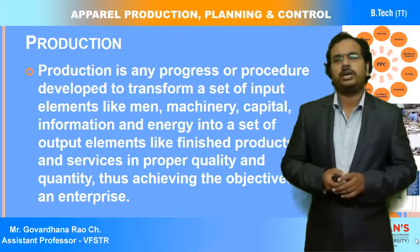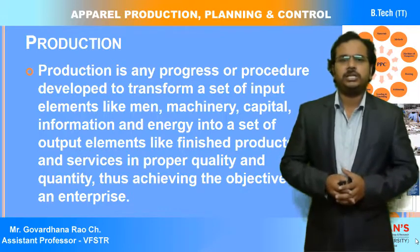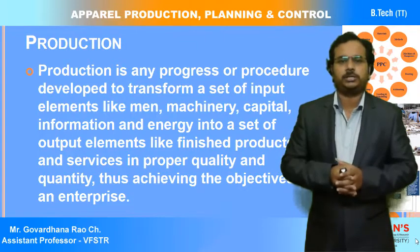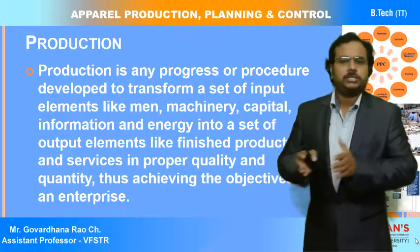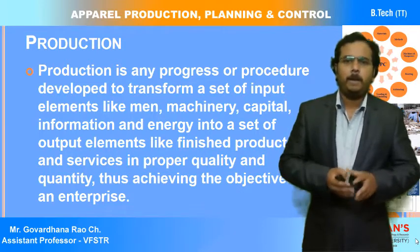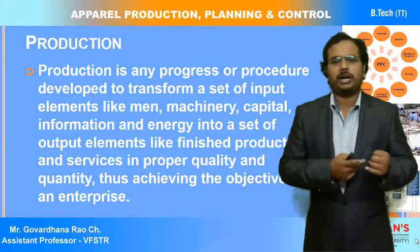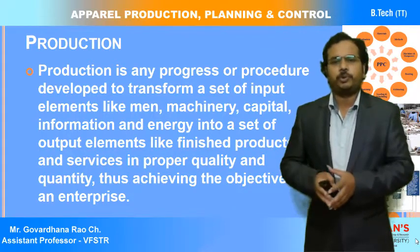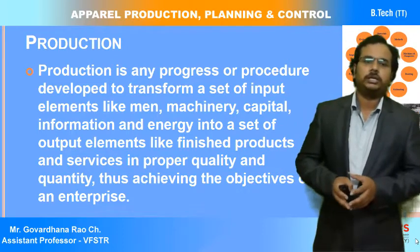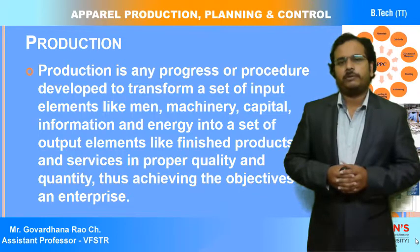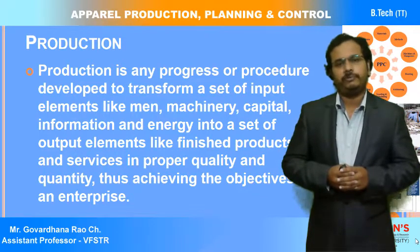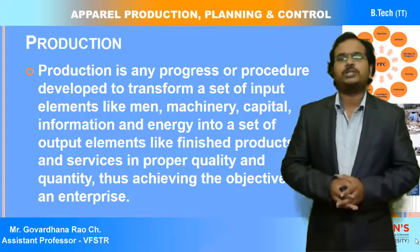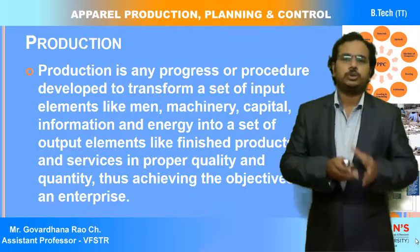Now we will see the definitions of production and productivity one by one. Production is a progress or procedure developed to transform a set of input elements into a set of outputs. In the slide you can see that inputs include men, machinery, capital, information, and energy, while the set of output elements are finished products or services in proper quality and quantity.